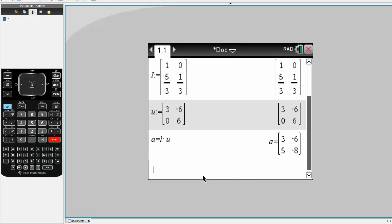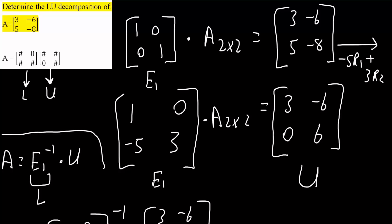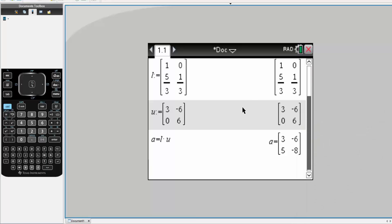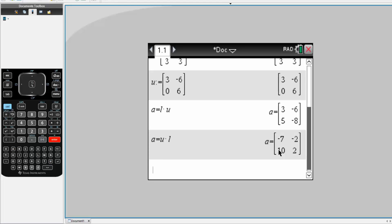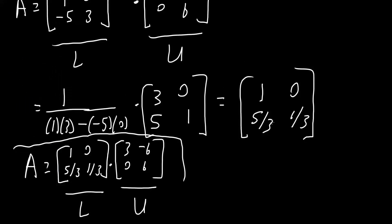I get [3  -6; 5  -8]. That number seems familiar. Let me show you why that is. Our starting problem was that: 3, -6, 5, -8. However, if I say that A is equal to U times L, I get something different. And so, that is wrong. And that is how we do LU decomposition for a 2 by 2 matrix.